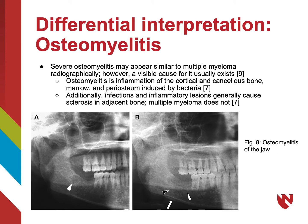Another condition that may be similar to multiple myeloma radiographically is severe osteomyelitis; however, a visible cause for it usually exists. Osteomyelitis can be defined as bacterial-induced inflammation of the cortical and cancellous bone, marrow, and periosteum. Furthermore, infections and inflammatory lesions typically cause sclerosis in adjacent bones, whereas multiple myeloma does not.